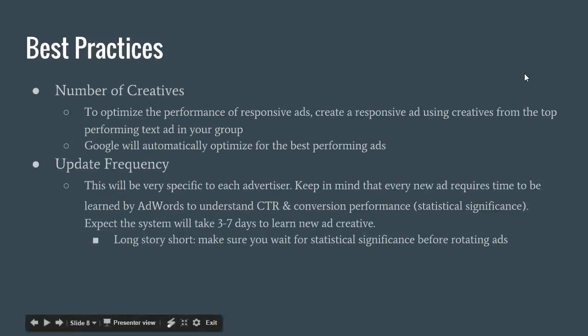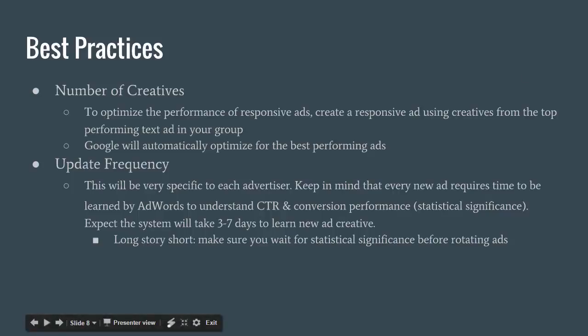Best practices for the number of creatives: to optimize the performance of responsive ads, create a responsive ad using creatives from the top-performing text in your ad group. Take the ads that were performing well previously and build on top of that — don't try to revamp it entirely. Use the same copy you've already done A/B split testing on, but add an extra description line because we have that extra room.